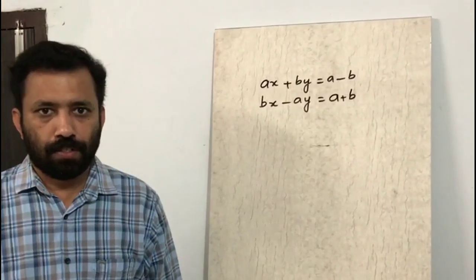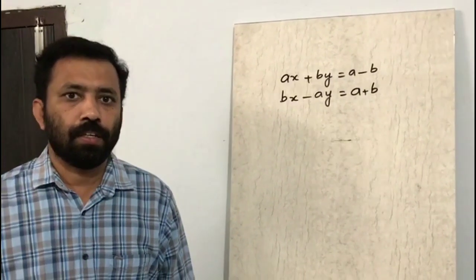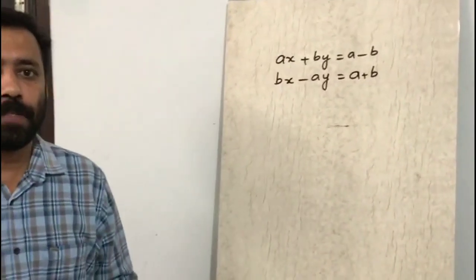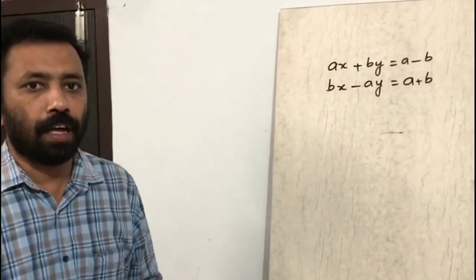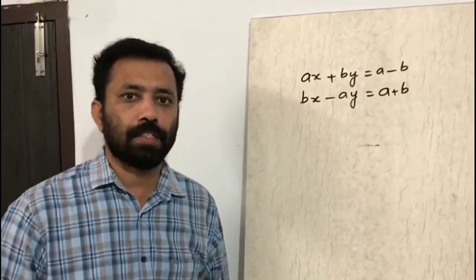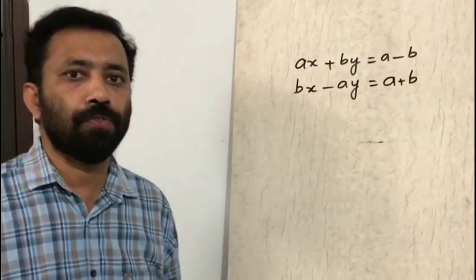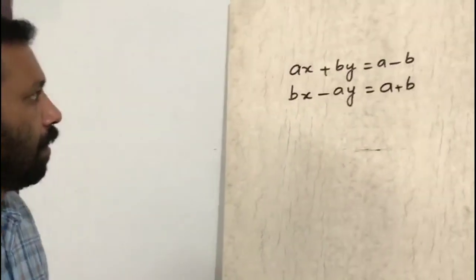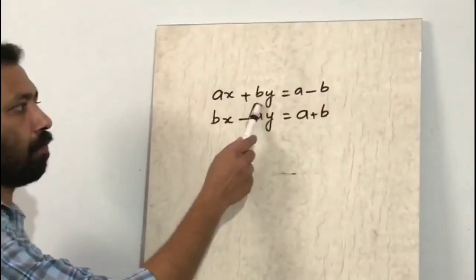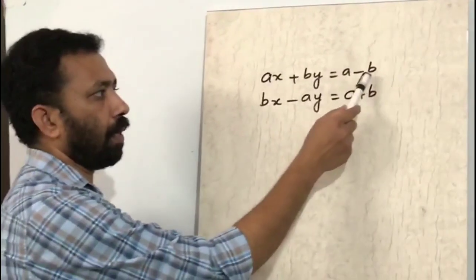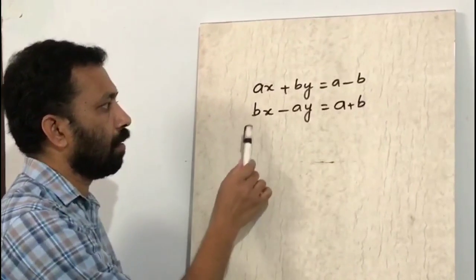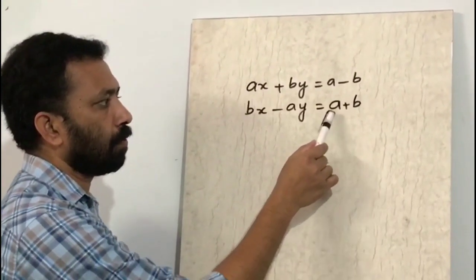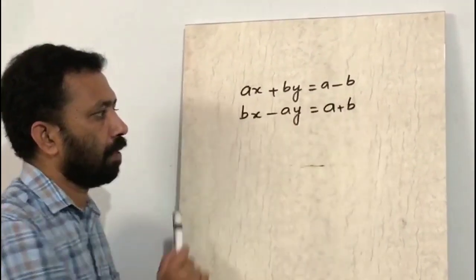Good morning students. Today you are going to learn a special type of pair of linear equations in two variables. For example: ax + by = a - b and bx - ay = a + b.